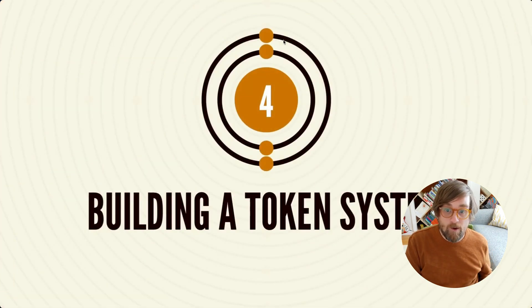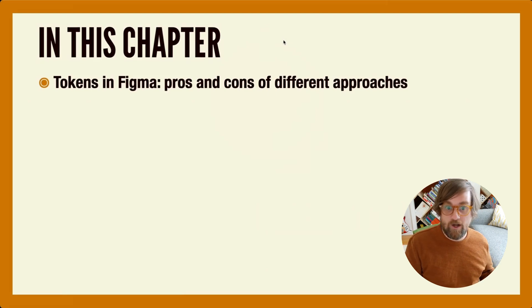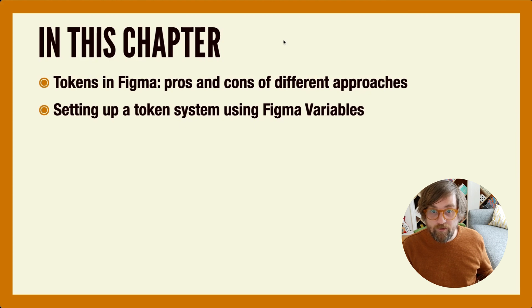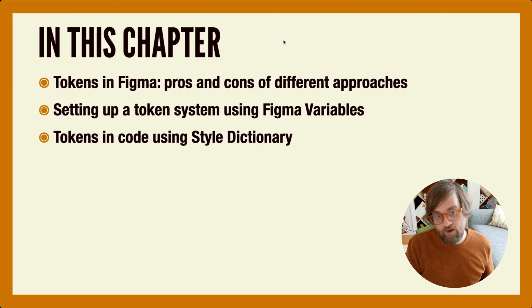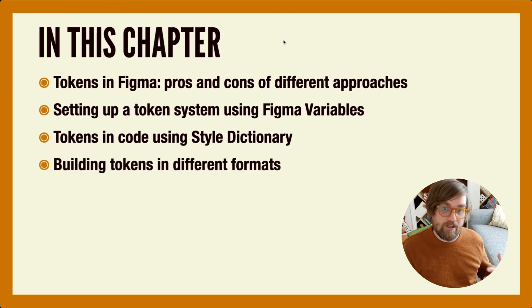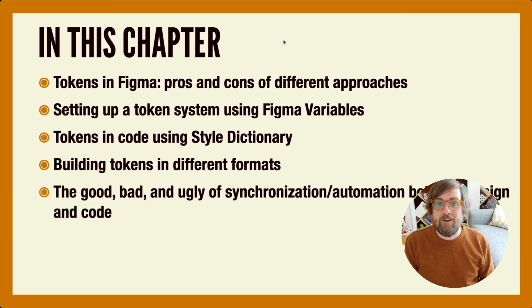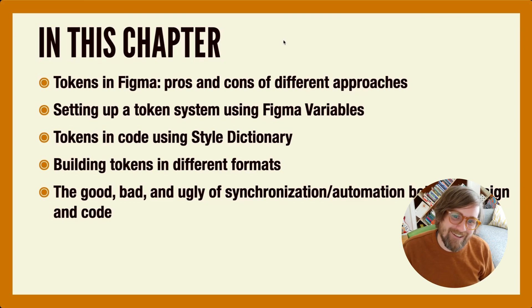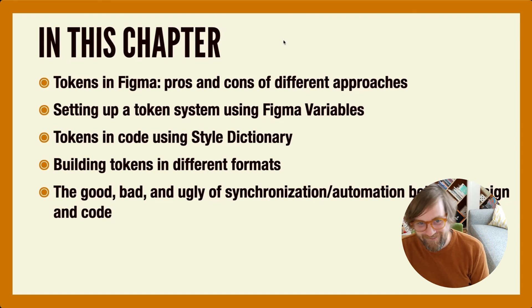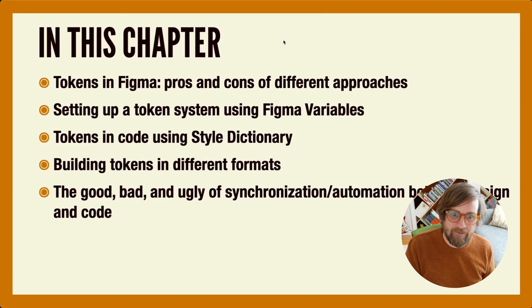Chapter four is about building a token system — the different ways to bring a token system to life and manage tokens in Figma, including using Figma variables, which is the built-in native approach. We're also going to talk about building a token system in Style Dictionary to output different formats like CSS custom properties, Sass variables, JSON, and others. We'll cover the good, the bad, and the ugly of synchronizing and automating things between design and code, sharing what we've learned from working with many different teams.